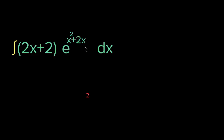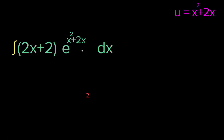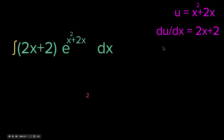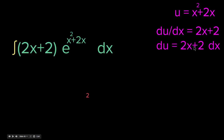To use u-substitution, we substitute u for the function: let u = x² + 2x, and take the derivative. The derivative of u with respect to x is du/dx = 2x + 2. We can treat du/dx as a fraction, so du = (2x + 2) dx. This step is very important.